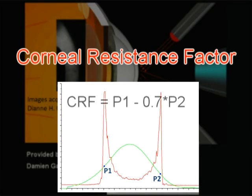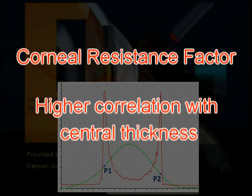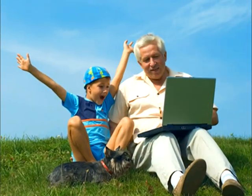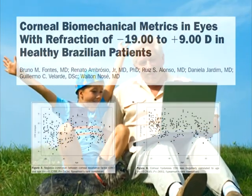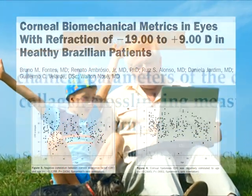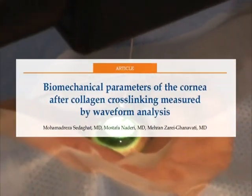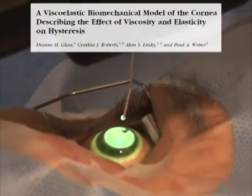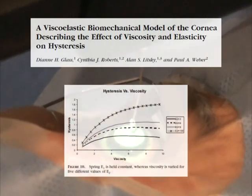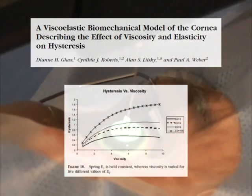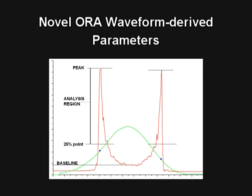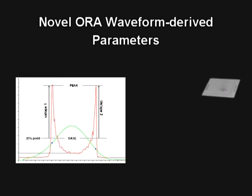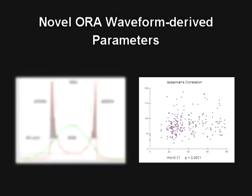Corneal resistance factor is an empirical function also calculated from P1 and P2. There is a negative correlation of CH and CRF with age, and there were no changes in CH one year after collagen cross-linking of the cornea. Thus, there are examples of low CH in both stiff and soft corneas. Interestingly, the study of novel parameters derived from the infrared corneal signal provide parameters that are positively correlated with age.